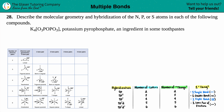Number 28: describe the molecular geometry and the hybridization of the nitrogen, phosphorus, or sulfur atoms in each of the following compounds. We have K₄P₂O₇, which is potassium pyrophosphate — an ingredient in some toothpaste. We're going to find out the molecular geometry and hybridization specifically of phosphorus, since there are no nitrogens or sulfurs here.